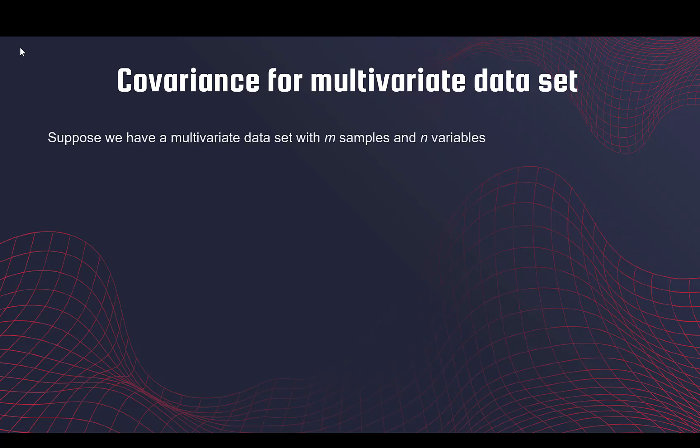Pretend we have a multivariate data set with m samples and n variables. Note that n is the number of variables and not the sample size. This is the first sample, second sample, and so on to the mth sample. Suppose you want to find the covariance between the first two variables.